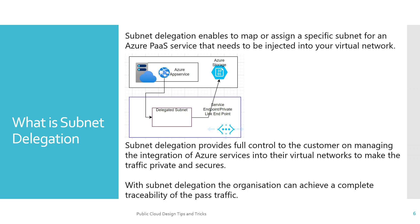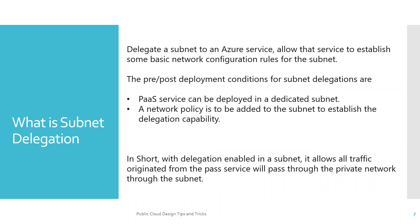With subnet delegation, the organization can achieve complete traceability of PaaS traffic. Delegating a subnet to an Azure service allows that service to establish some basic network configuration rules for the subnet. The pre and post deployment conditions are: a PaaS service can be deployed in a dedicated subnet, and a network policy needs to be added to the subnet to establish the delegation capability — connecting traffic originating from the PaaS service into your private boundary through that delegated subnet. With delegation enabled, all traffic originated from the PaaS service will pass through the private network via the subnet.